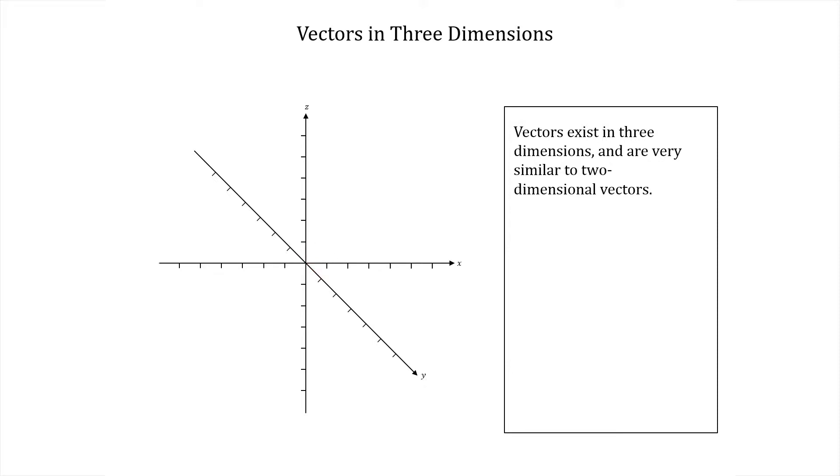Let's move a distance a along the x-axis, and distance b along the y-axis, to this point here. Then let's move distance c along the z-axis, and consider the directed line segment from the origin to this point. We'll call it V.